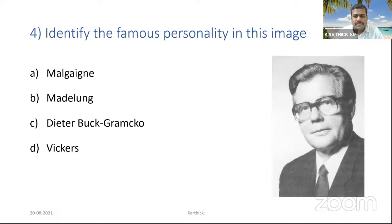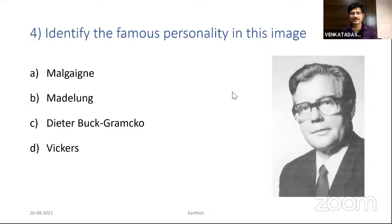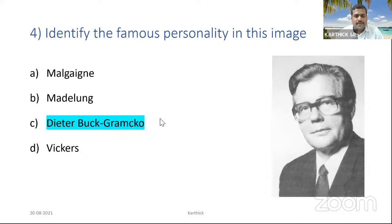The fourth question asks to identify the famous personality in an image. Thirty-six percent voted for Madelung, but the correct answer is Buck-Gramcko from Hamburg, Germany — he coined the term 'radialization' in radial club hand surgery. This is very important for today's topic.